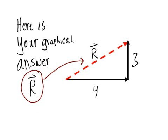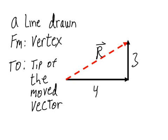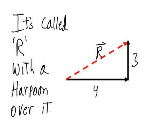A line drawn from the vertex to the tip of the moved vector. It's called R with a harpoon over it.